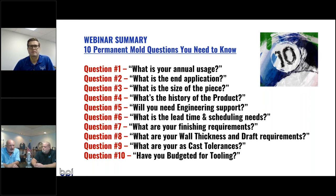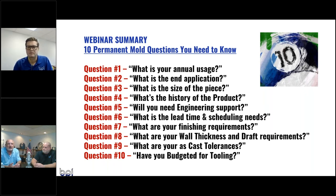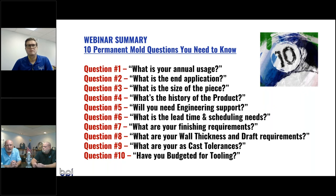Absolutely — we see overmolding quite often in the lighting industry and the medical industry. Typically the first secondary is heat treat, then you might have polishing, secondary machining, powder coating, impregnation, painting, or HIPping — there are all types of secondaries we've done over the years. Your application will determine what we end up doing. A lot of what you see is done in-house, so ask your foundry how much they actually do in-house.